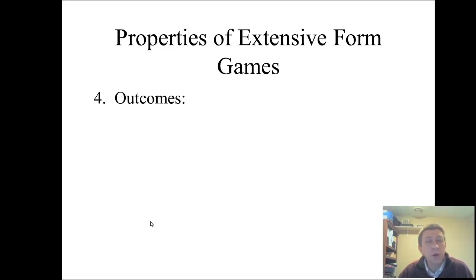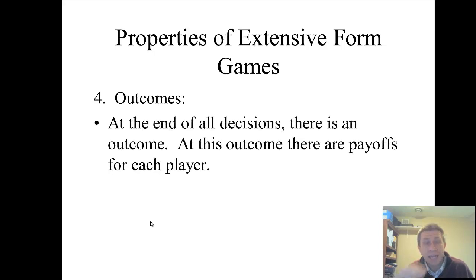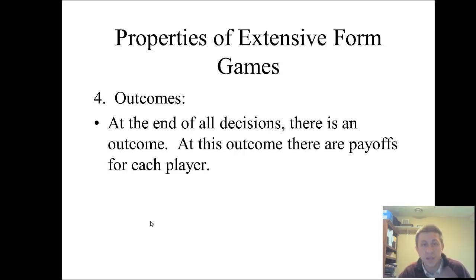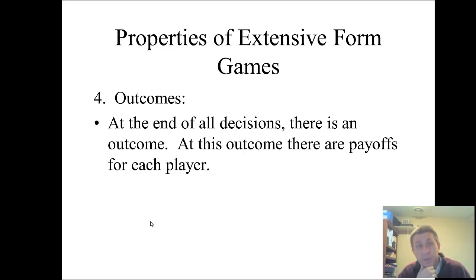The outcomes of the game are written at the end of all of the decisions. You'll have a decision node, the various branches, then other possible decision nodes and more branches. By the time you're done with all of those at the bottom, that's the outcome, and you write in the payoffs for each player, similar to how you would write them into a payoff matrix.